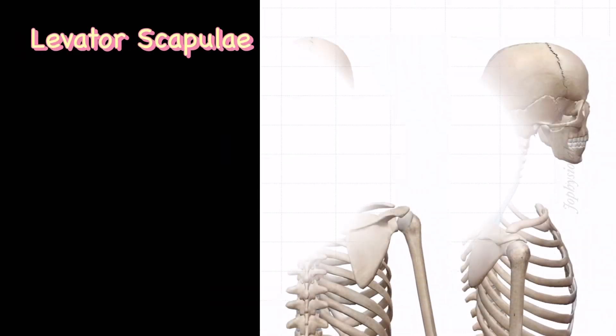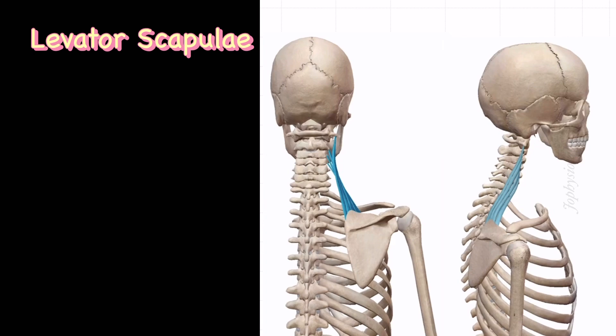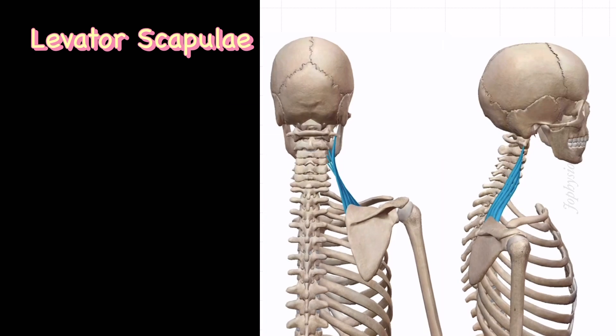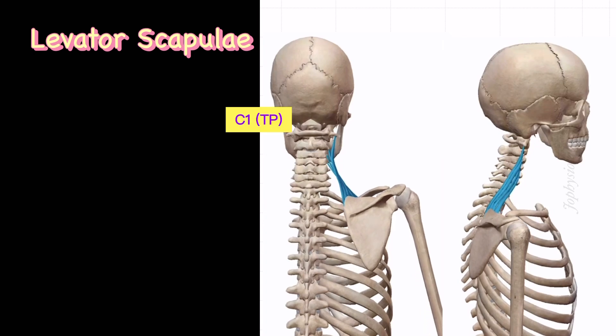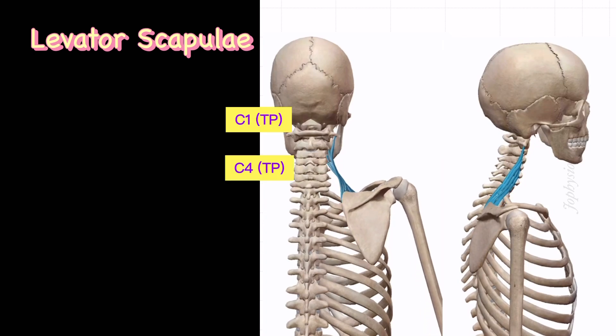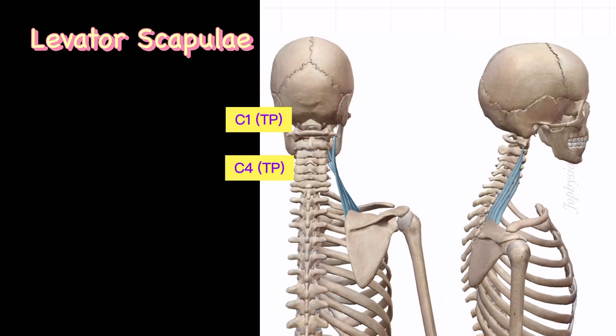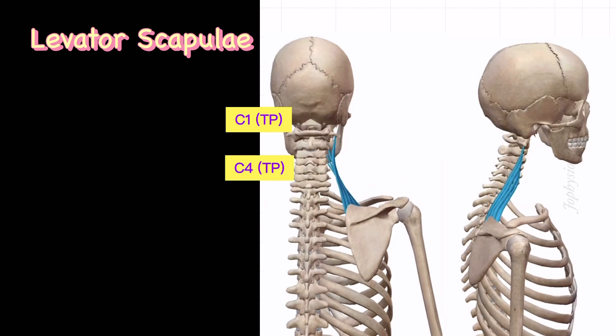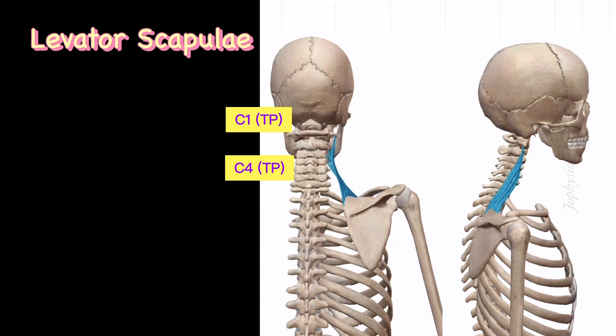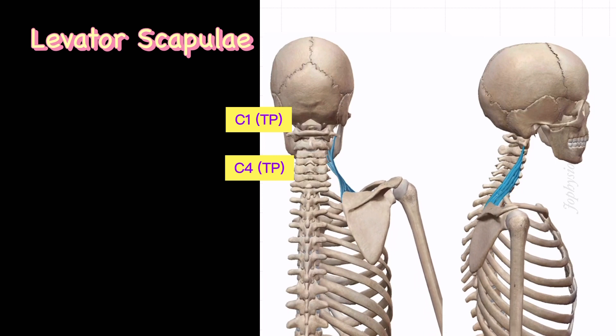The levator scapulae muscle attachment begins with C1 to C4 transverse processes of the vertebrae. This muscle inserts at the medial border of the scapula, from the superior angle to the root of the spine of the scapula.